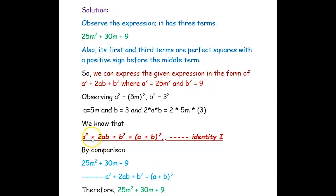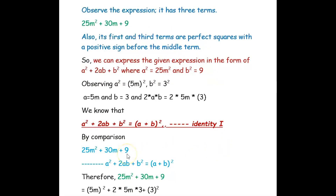We know that a squared plus 2ab plus b squared is equal to (a + b) whole squared. This is the factored form and we are representing it as Identity 1. Now we can compare our given expression and write it in the form of this identity. The given expression is 25m squared plus 30m plus 9, and we compare it with a squared plus 2ab plus b squared.